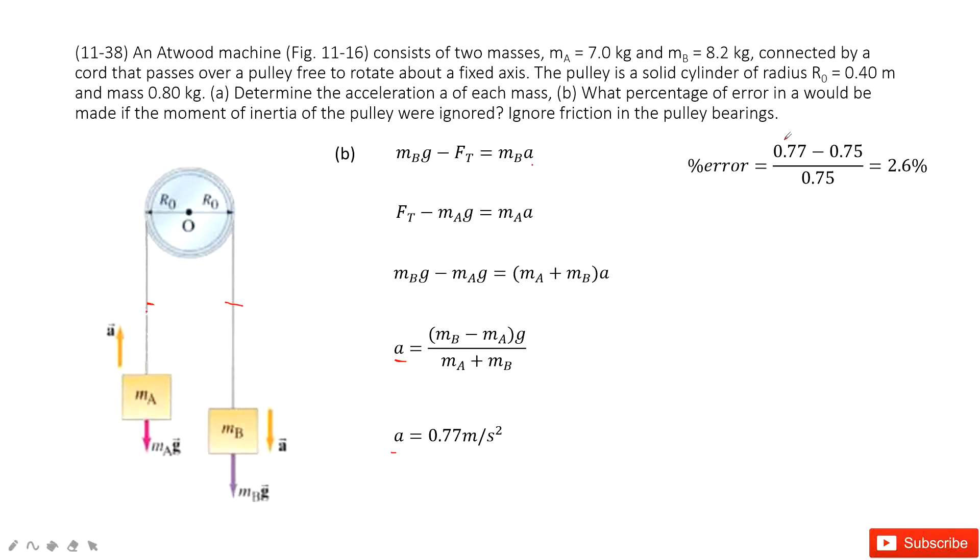And then, we find the percentage error. We use the acceleration without the moment of inertia minus the acceleration with moment of inertia, and then divide by the acceleration with moment of inertia. We get just a very small percentage of error. Thank you.